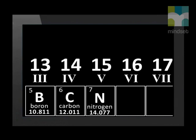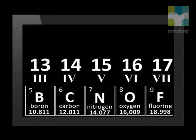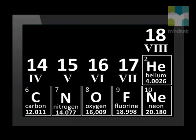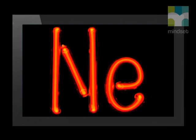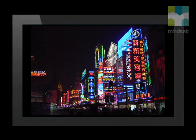The next element, nitrogen, has atomic number 7 and is represented by capital N. Oxygen has atomic number 8 and its symbol is capital O. Next is fluorine — it has atomic number 9 and the symbol capital F. The final element in this row is neon. It has the symbol capital N, lowercase e, and atomic number 10. Neon is a noble gas and is not reactive but gives off a bright light when electricity passes through it, used in shop signs and city centres.